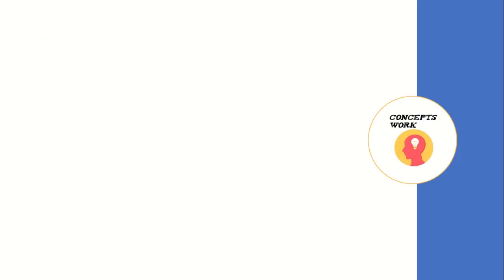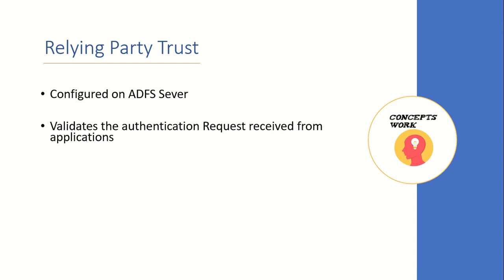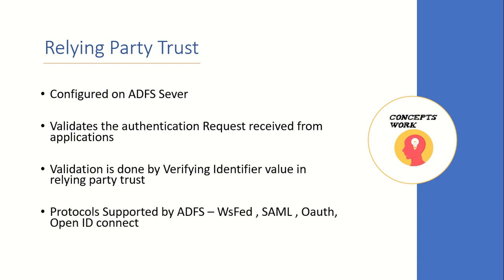Let's do a quick summary of key concepts about relying party trust. First, it is always configured on the ADFS server for an application which will be contacting ADFS to get authentication done. ADFS validates the authentication request received from the application using the information available in the relying party trust. The validation is done by the identifier value in the relying party trust, which must be present when the application sends the authentication request. Protocols supported by ADFS are WS-Fed, SAML, OAuth, and OpenID Connect — 2016 supports all four, while 2012 R2 supports WS-Fed, SAML, and a particular flow of OAuth.